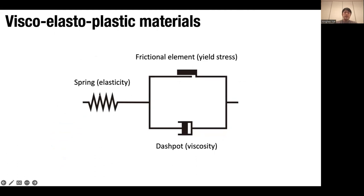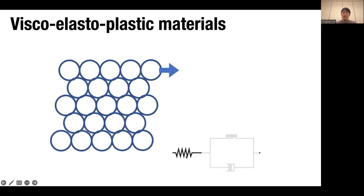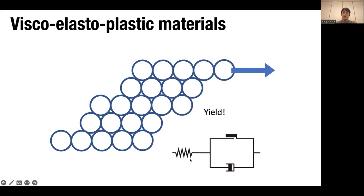With elasticity, yield stress, and viscosity, you can write a schematic view for your viscoelastoplastic material. When the force is small, only the spring works. When the force is larger, the yield condition is violated and your viscosity — the dashpot — starts to play a role.